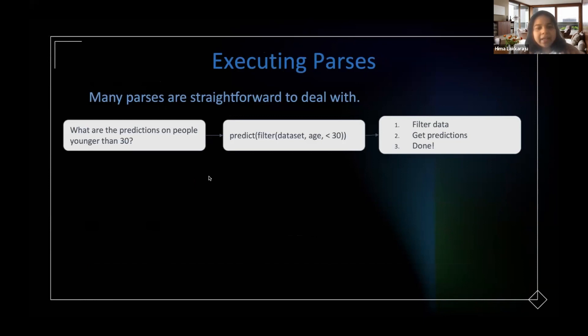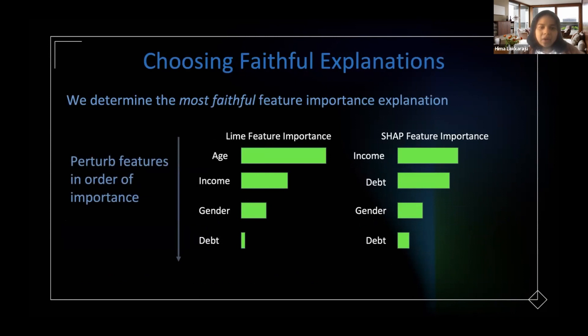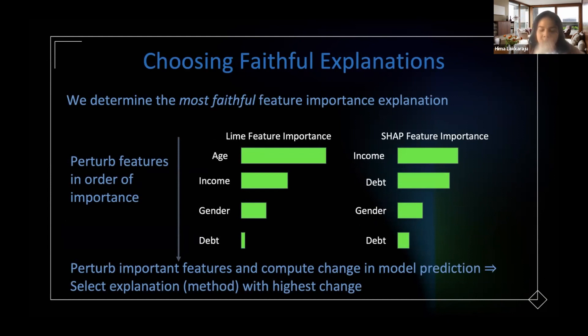A lot of these parses were straightforward to deal with, but the most important thing for us is to figure out which feature importance explanation to pick. We could always, for example, when an end user says explain predictions for people younger than 30, we can map it to something like explain. But which method would you use? In order to work around that problem, the way we deal with that is essentially look at this sort of a metric where we compute these explanations from the different methods, for example LIME, SHAP, gradient-based methods and so on. But then we compute this metric on each of the explanations where we take the feature importances, like the top K features output by each of the methods, we perturb those features and then see how much the model prediction changes.